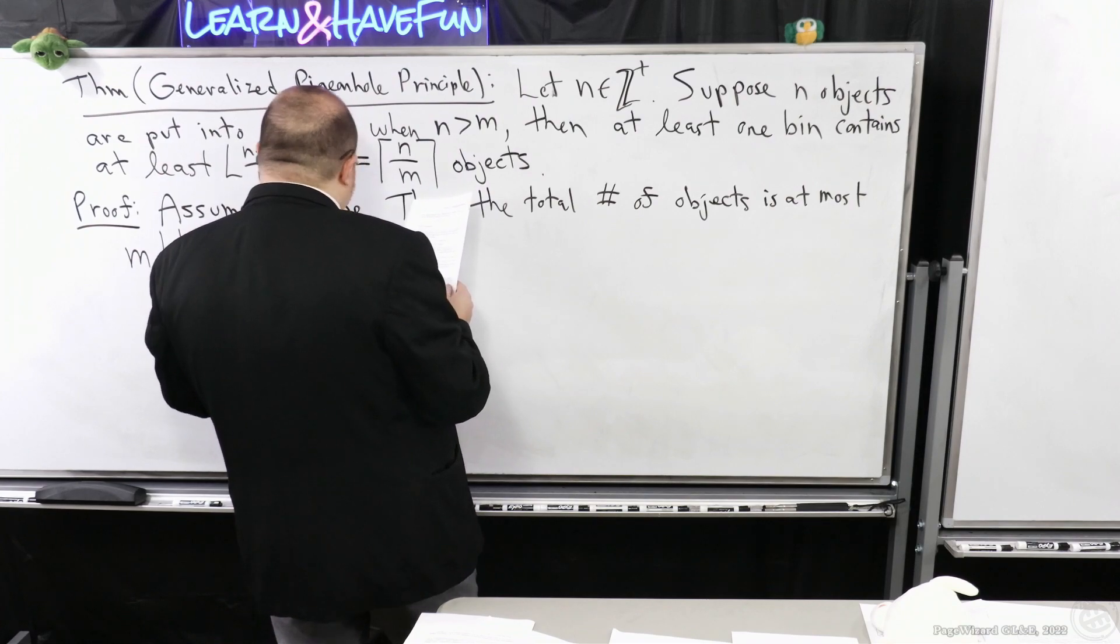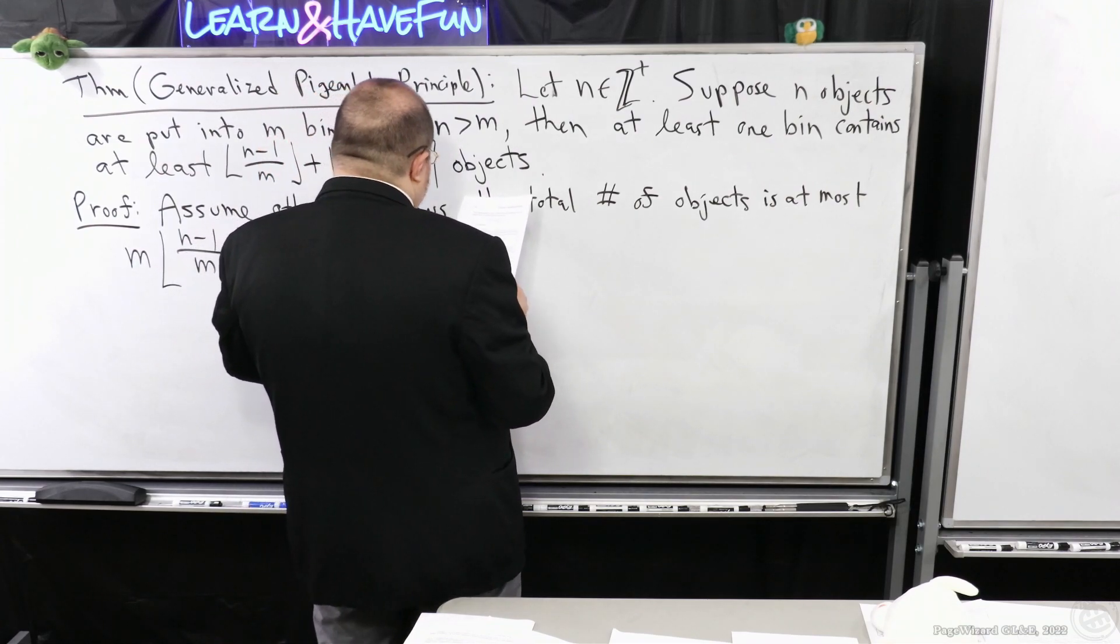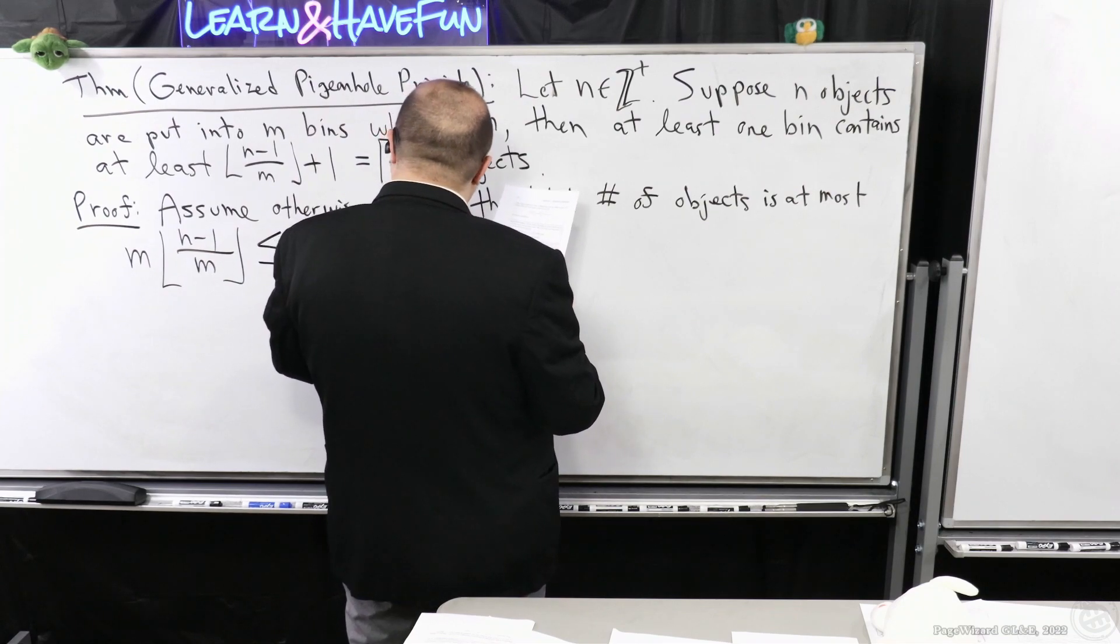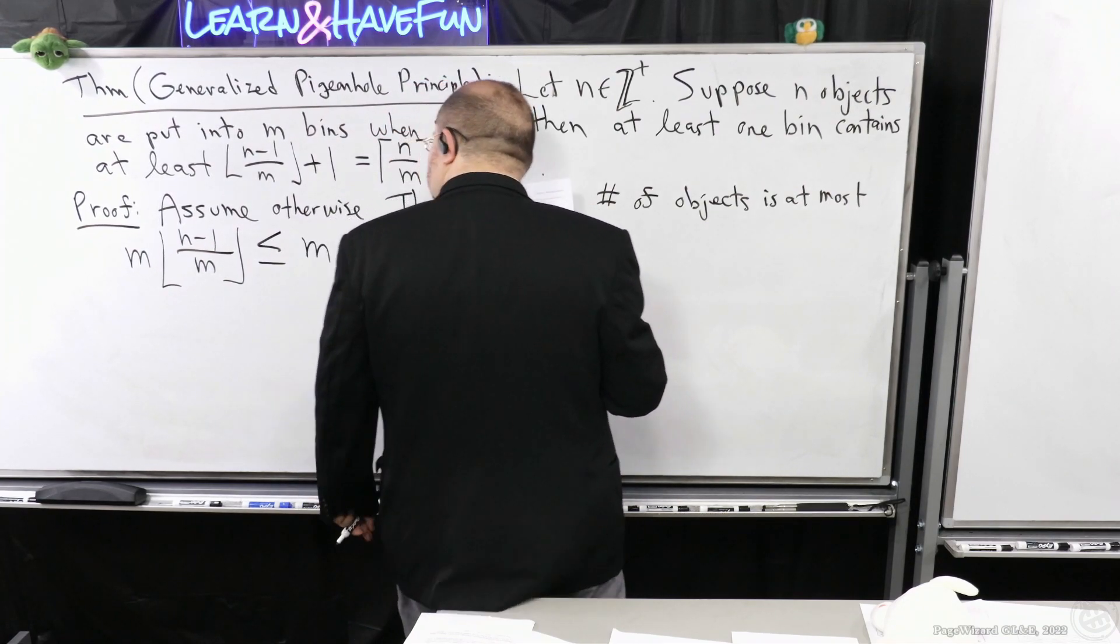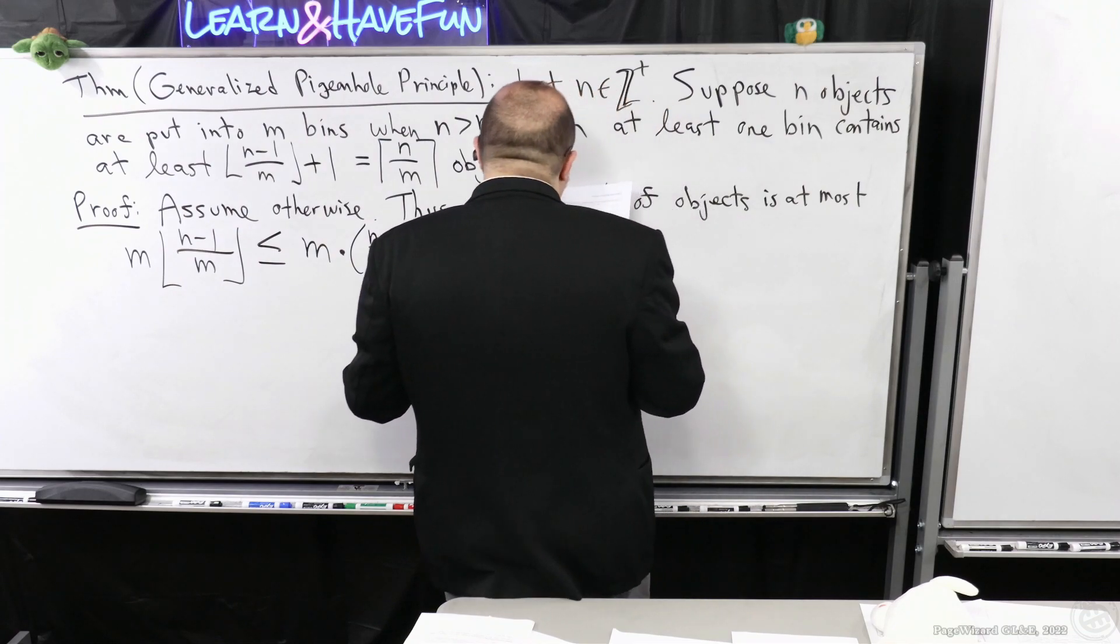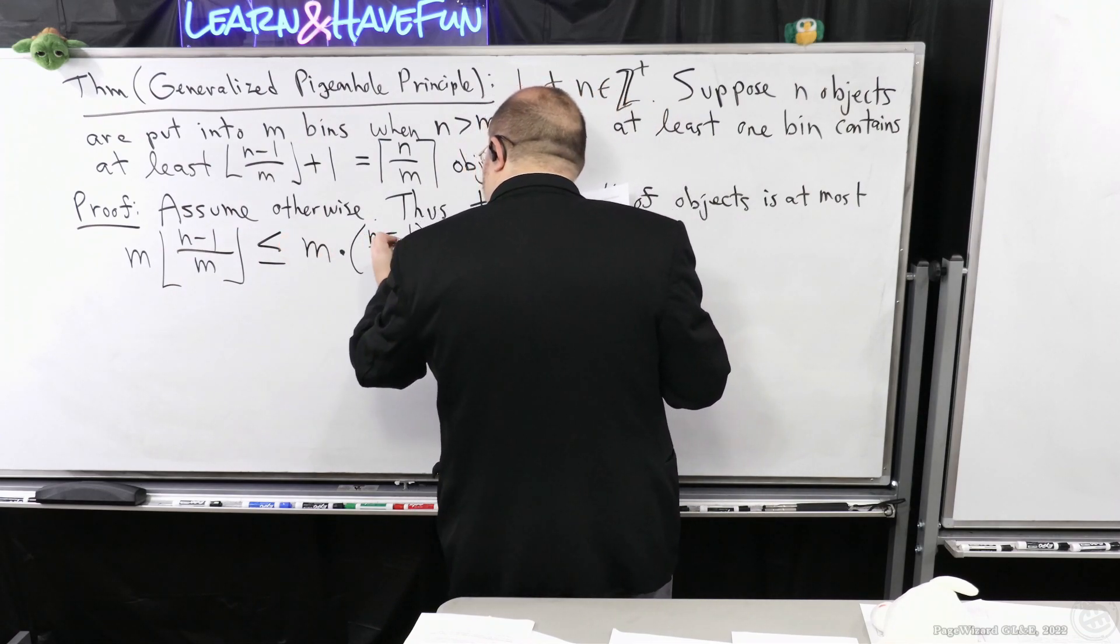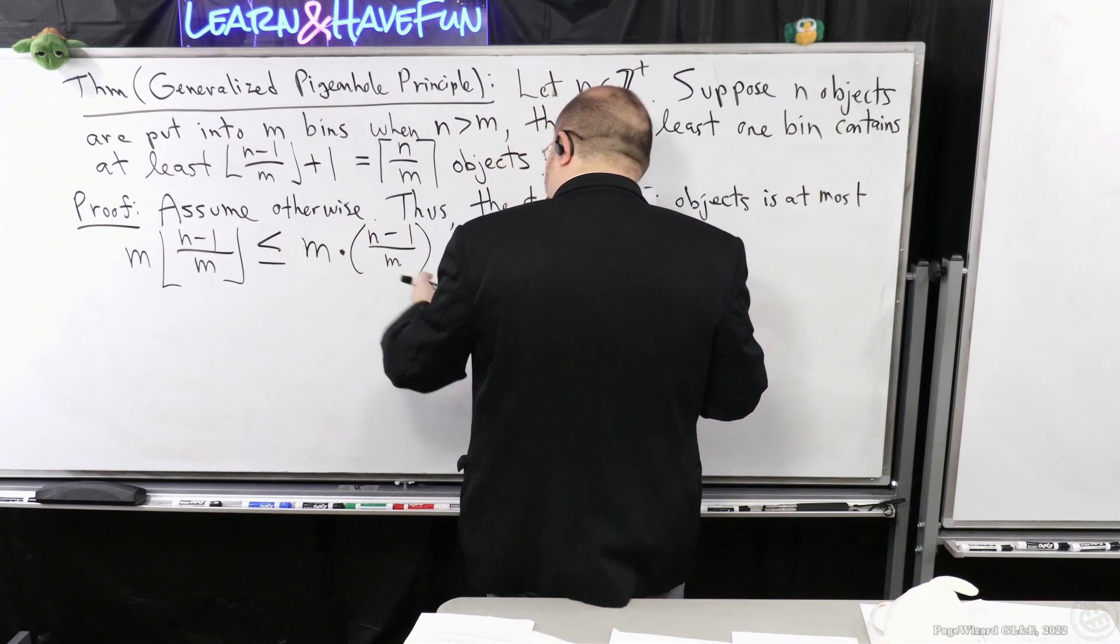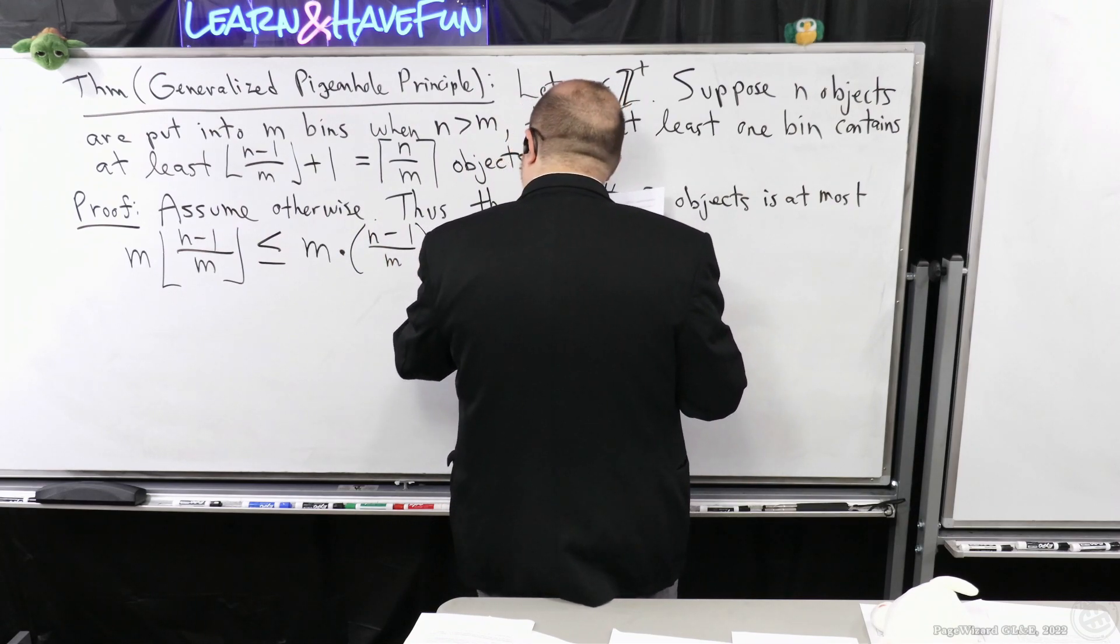But this is less than or equal to m times whatever this would be without rounding it down. This either has to be the same as that or it's bigger. But let's see, m times this over m, m divided by m, you just cancel those out, you end up with n minus one.